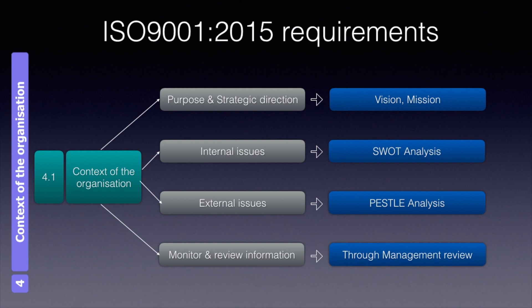Clause 4.1 asks about determining internal and external issues in line with the purpose and strategic direction of the organization. Purpose and strategic direction can be the vision and mission or business plan of the organization. ISO 9001 asks to determine internal and external issues relevant to the quality management system. Internal issues can be determined using SWOT analysis, and external issues using PESTEL analysis.